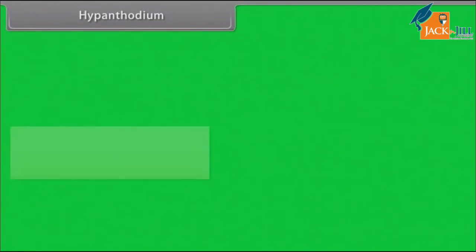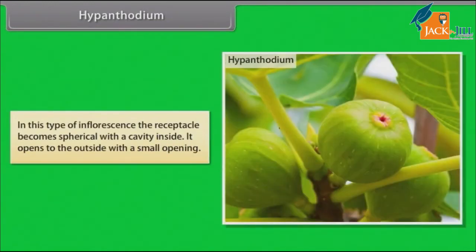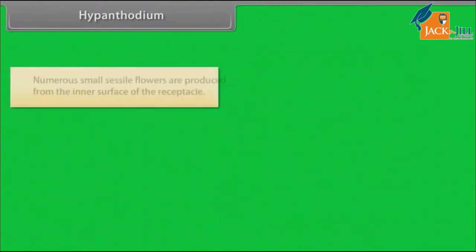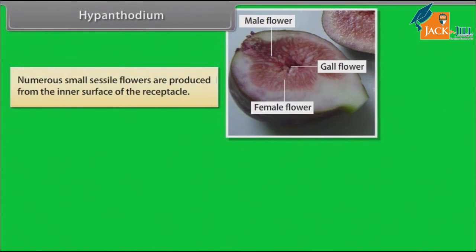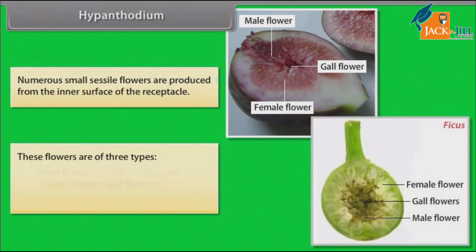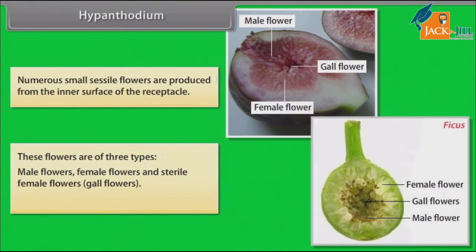In hypanthodium, the receptacle becomes spherical with a cavity inside. It opens to the outside with a small opening. Numerous small sessile flowers are produced from the inner surface of the receptacle. These flowers are of three types: male flowers, female flowers, and sterile female flowers (gall flowers). Example: Ficus.